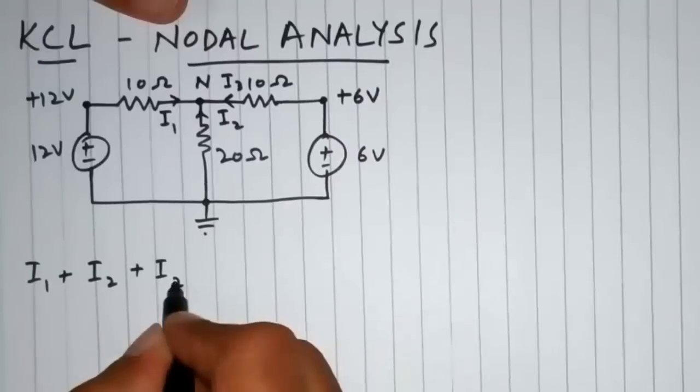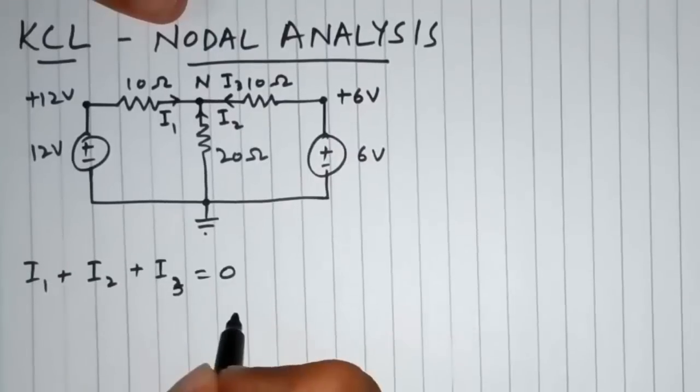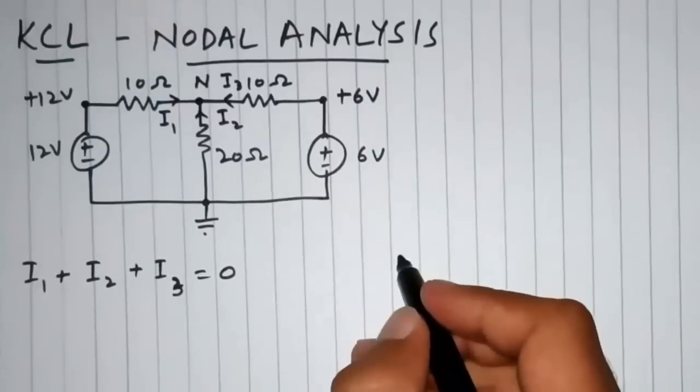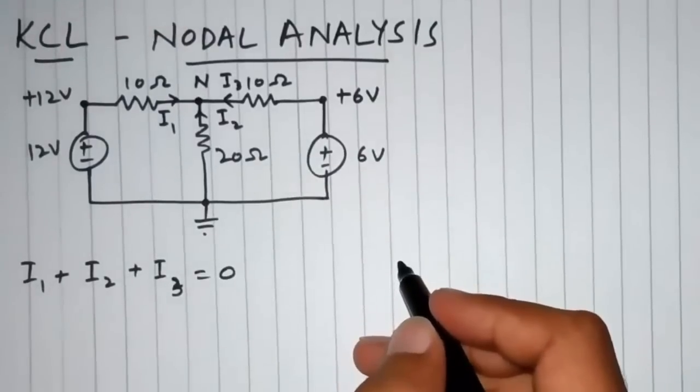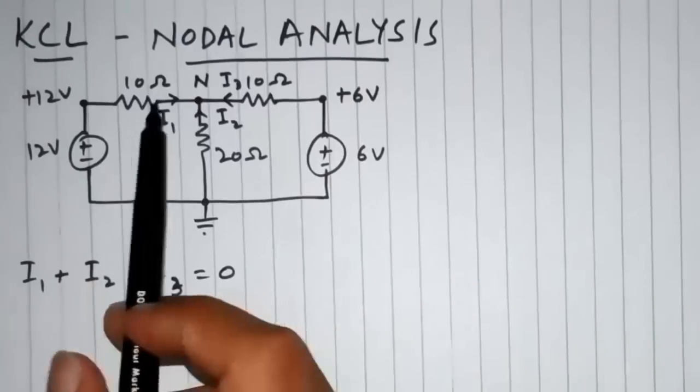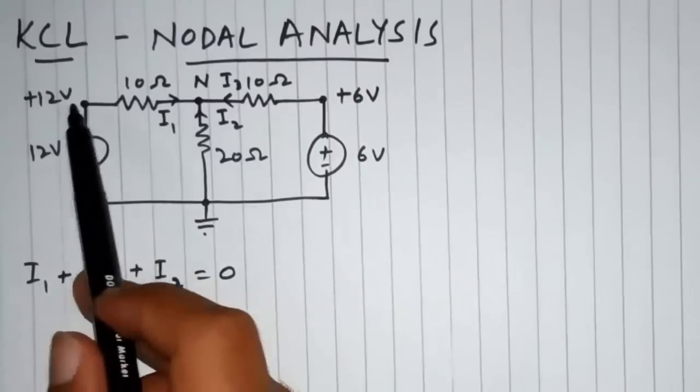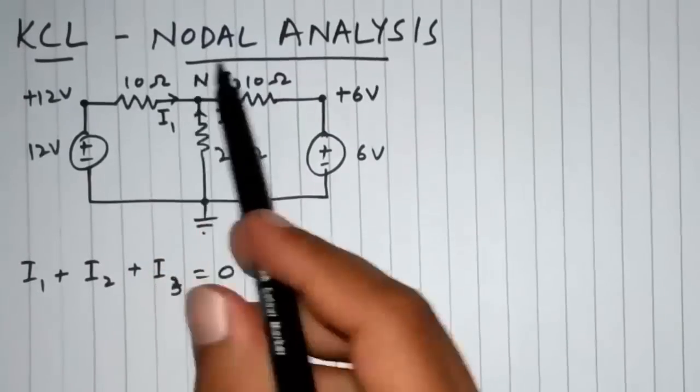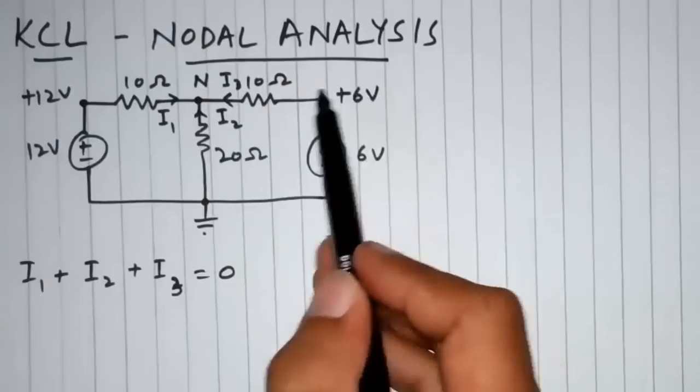We can see from the circuit that current flows from higher potential to lower potential. Since the current is flowing in this direction, it means 12 volts is greater than N. In this direction it means 0 is greater than N, and in this direction it means +6 volts is greater than N.